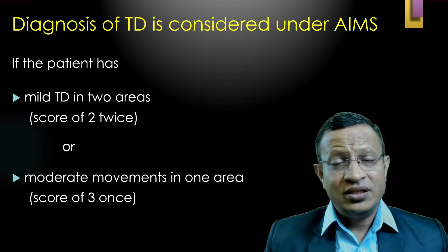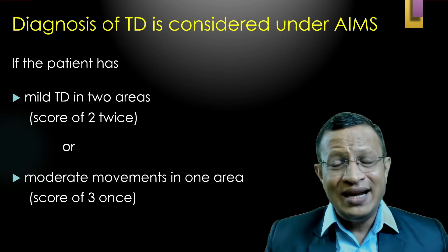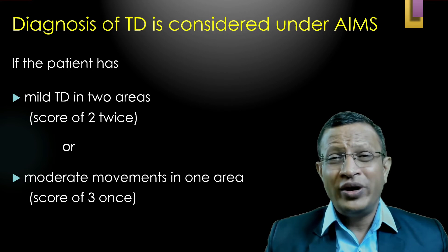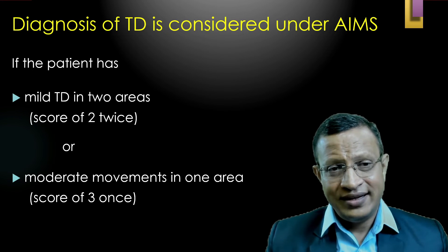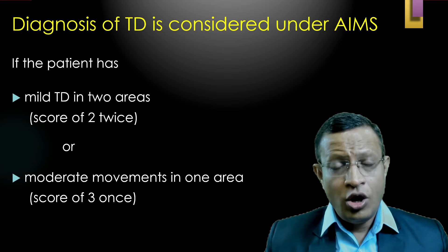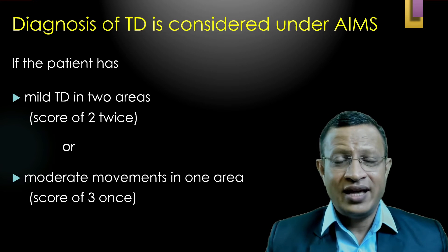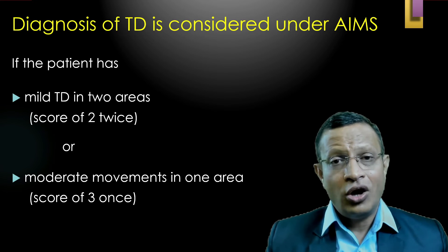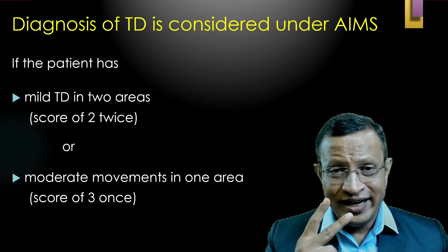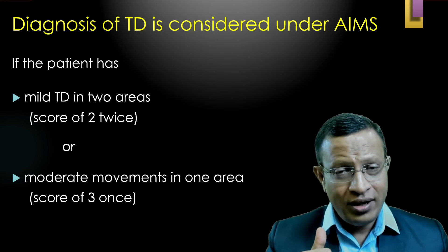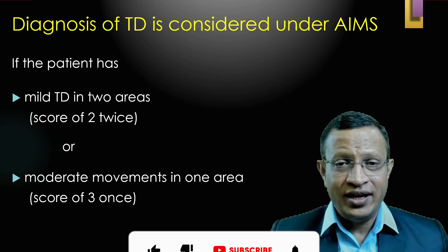Whether the patient has TD or not is based on the scoring. If the patient is scoring 2 (mild) in two of the areas, then the patient has TD. Otherwise, if the patient scores 3 (moderate) in one area, then tardive dyskinesia or tardive syndrome is considered present. To repeat: if he scores mild in two areas, TD is present; or if he scores moderate in one area, he has TD.